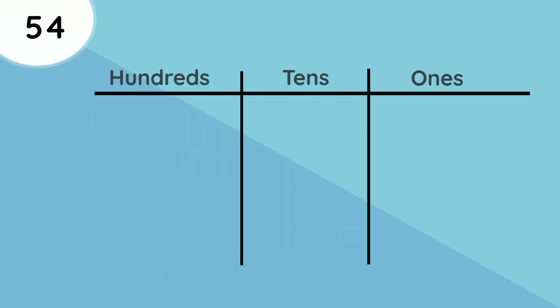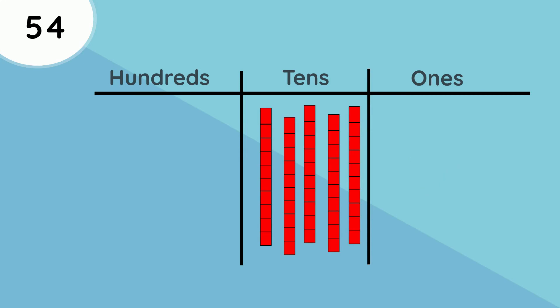In the number 54, the place value of the five is tens and the place value of the four is ones. Represented with cubes it would look like this. There are five sets of tens and then four ones.